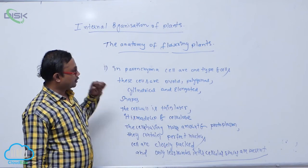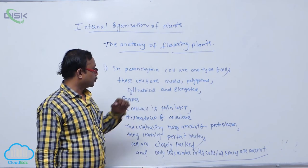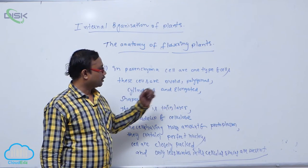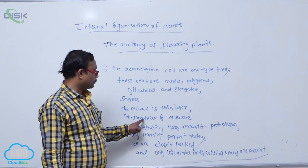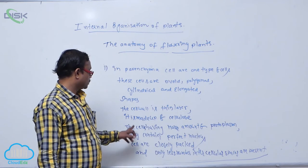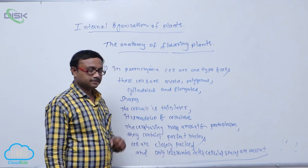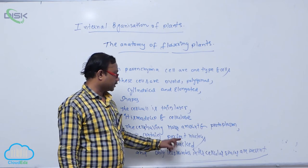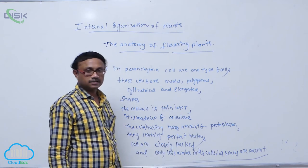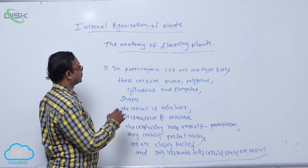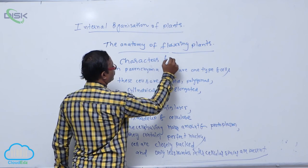In parenchyma, cells are one type of cells. The cells are ovoid, polygonal, cylindrical, and elongated shapes. The cell wall is a thin layer made up of cellulose. The cells have more amount of protoplasm and contain a perfect nucleus. Cells are closely packed, and only a less number of intercellular spaces are present. These are the characters of parenchyma tissue.